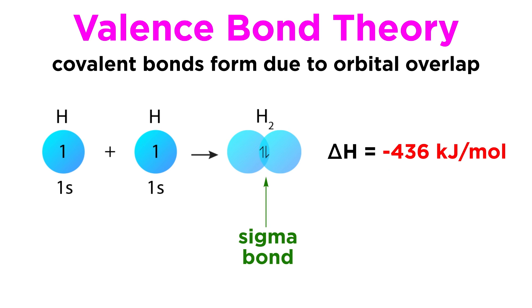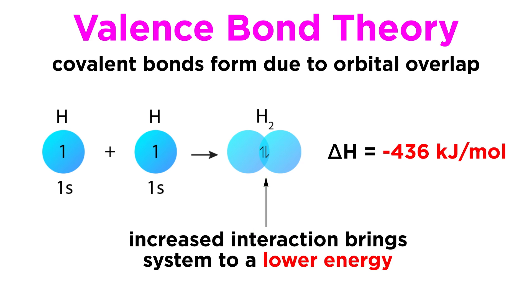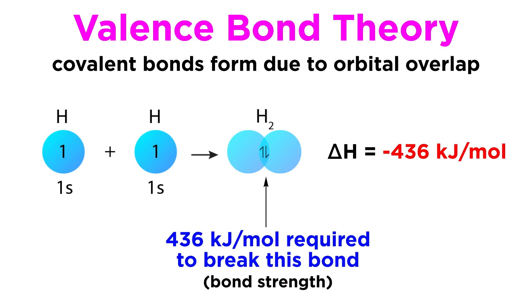As a result of the orbital overlap in the case of H2, 436 kilojoules per mole are released, as the system goes to a lower potential energy by virtue of the increased interaction which is stabilizing. This represents the bond strength for this particular type of bond, or the energy that would have to be provided by the surroundings to break this covalent interaction.